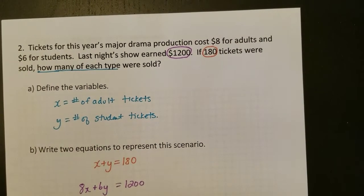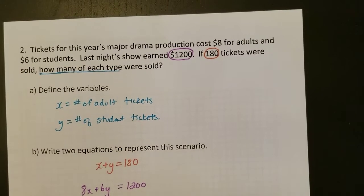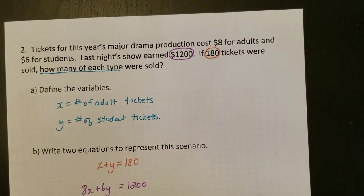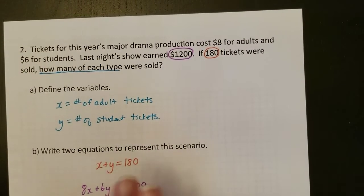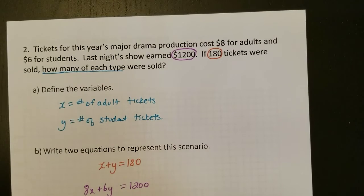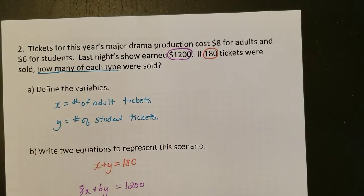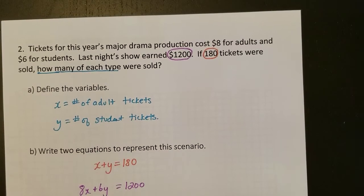Question number 2 said that tickets for this year's drama production cost $8 for adults and $6 for students. Last night's show earned $1,200. If 180 tickets were sold, how many of each type were sold? So when I'm going through this, we have really a lot of information, and when I'm looking at this, I want to figure out what different information would go together.